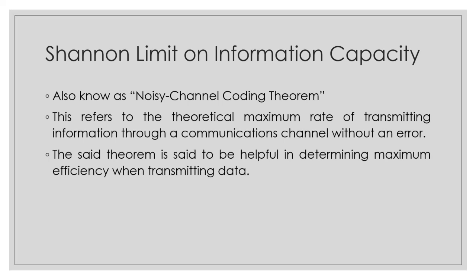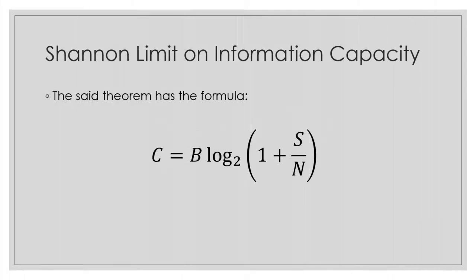This theorem is helpful in determining the maximum efficiency when transmitting data. To fully understand it, a formula was derived from the theorem. The formula is: C = B log₂(1 + S/N). In this formula, C is the maximum achievable data rate, with units of bits per second. B is the radio channel bandwidth, with units of hertz.